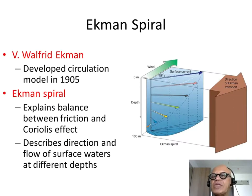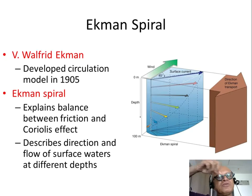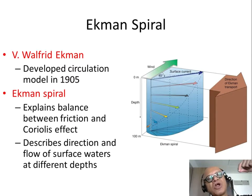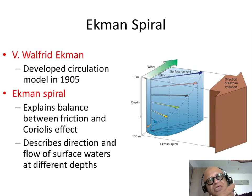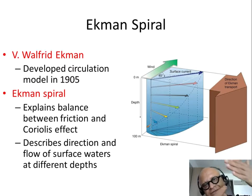In 1905, Ekman showed that at the surface, winds are dragging the ocean and ocean currents are tilted to 45 degrees to the wind direction by Coriolis. The waters below are again going to be tilted at 45 degrees to that ocean current. Why? Because it's the surface current that drags the water below it by friction, and since the current is already at an angle to the wind, the water below tilts further in the direction of that current.